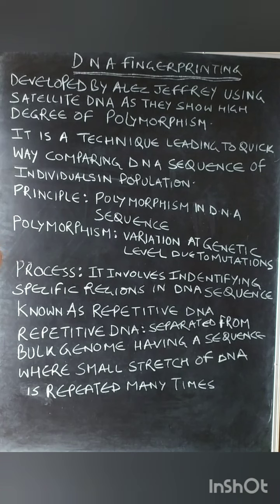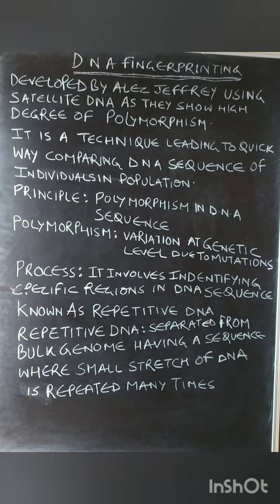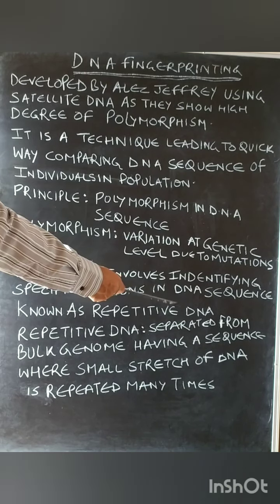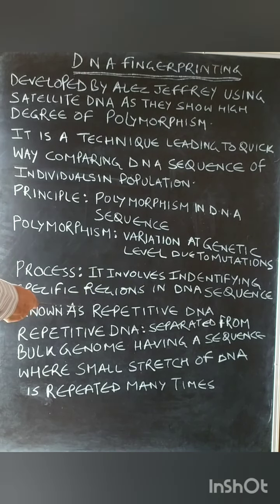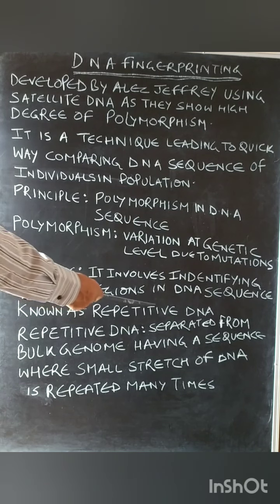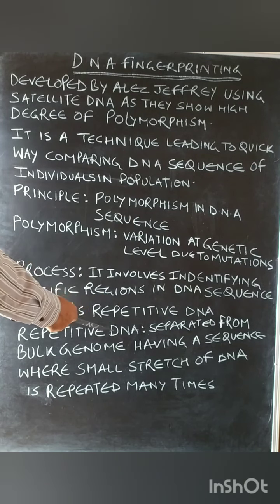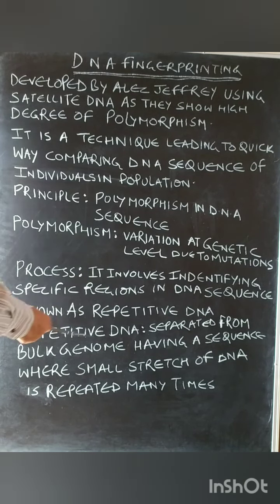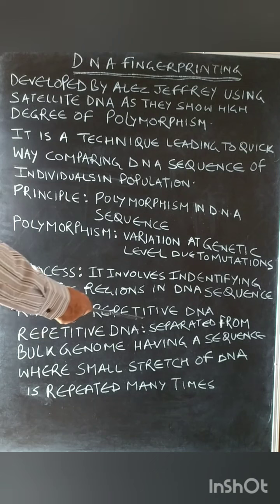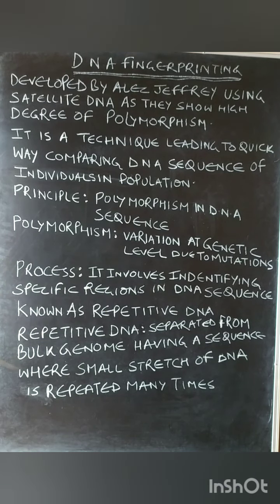The fingerprinting process involves identifying specific regions in the DNA sequence known as repetitive DNA. Repetitive DNA is separated from the bulk genome and has a sequence where a small stretch of DNA is repeated many times.